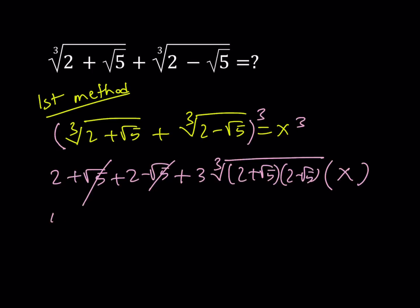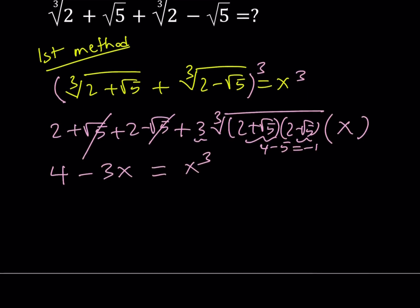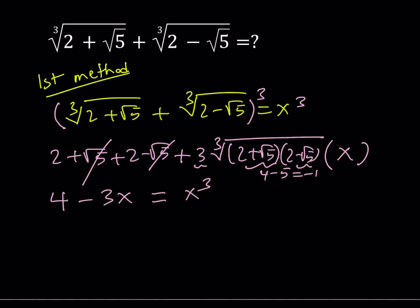2 plus 2 equals 4. And then I have this expression right here. So from difference of two squares, this is going to become 4 minus 5, which is equal to negative 1. So I have the cube root of negative 1, which is negative 1, multiplied by 3 — that is going to be negative 3x. We have to multiply by x and the whole thing is equal to x cubed. So this gives me a cubic equation, which is fairly easy to solve.